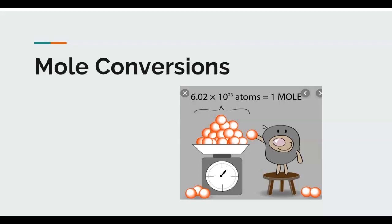It would take us generations — hundreds of years — to count even two moles. On top of that, atoms are so small that we would not be able to touch an atom and literally count one from the next. So we get around that by recognizing that one mole, 602 sextillion atoms, actually represents a specific mass of a specific element, and we use the periodic table to help us with that.